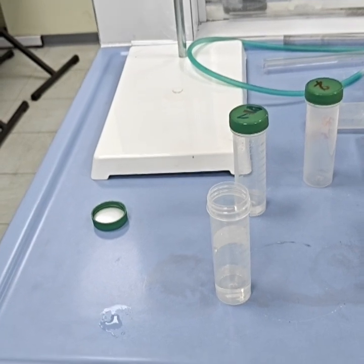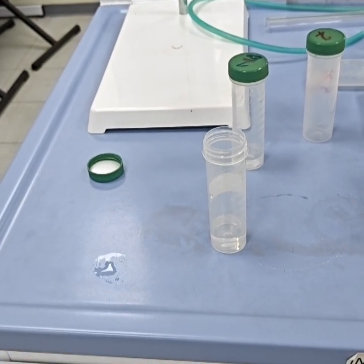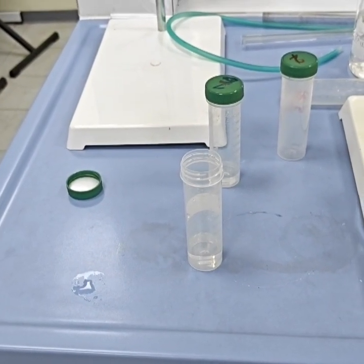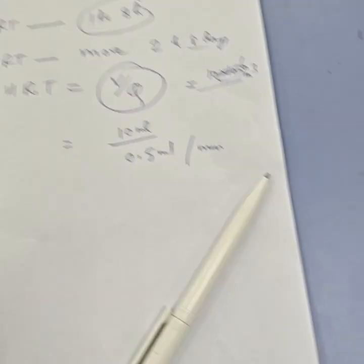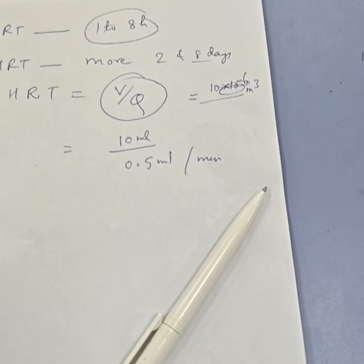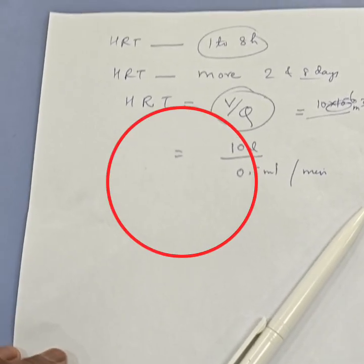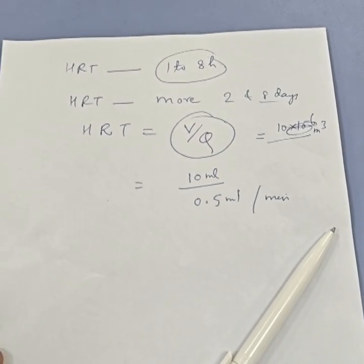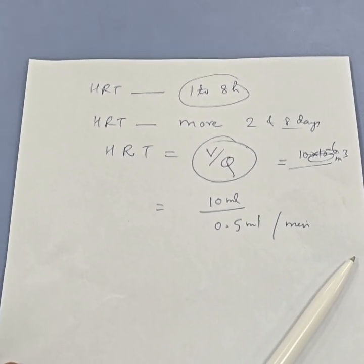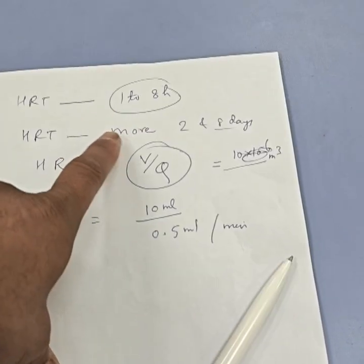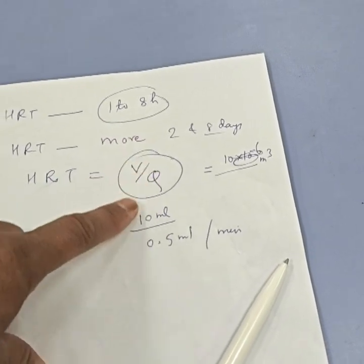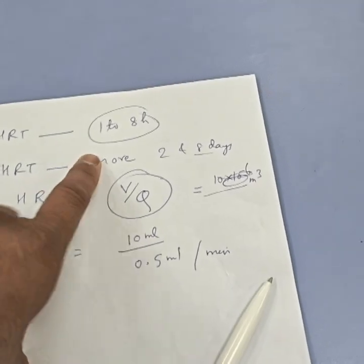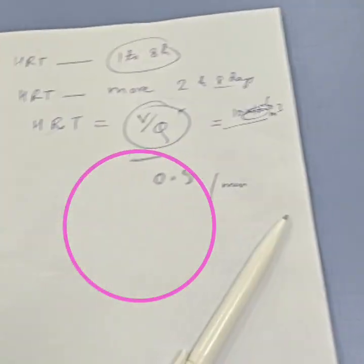Now we will calculate the hydraulic retention time which is called HRT for the filter. HRT is hydraulic retention time. It varies from plant to plant, usually it is one to eight hours, and for big scale water treatment plants usually two to eight days.